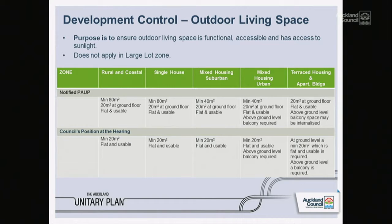Outdoor living space — another control that the council proposed to retain, but did propose a reduction in the minimum outdoor living space requirement. In the rural and coastal settlement zone and the single house zone it started at 80 square metres; the council proposed to reduce that to 20 square metres. Mixed housing suburban started at 40 square metres, proposed to reduce to 20. Mixed housing urban similarly 40 square metres, proposed to reduce to 20 square metres. In the terrace apartment building zone it was 20 square metres and is still retained at 20. For above-ground-floor apartments, a balcony with minimum prescribed dimensions is also required in the proposed plan.